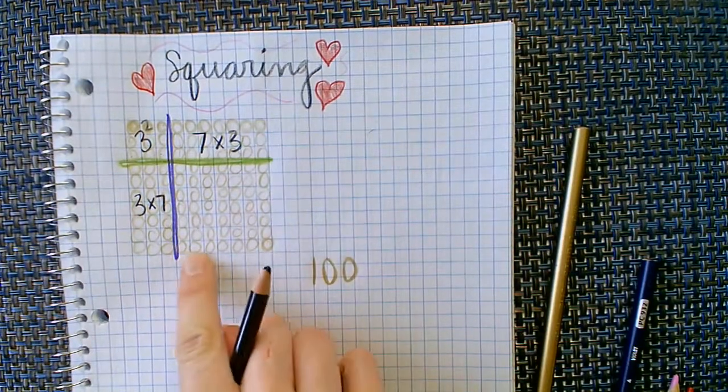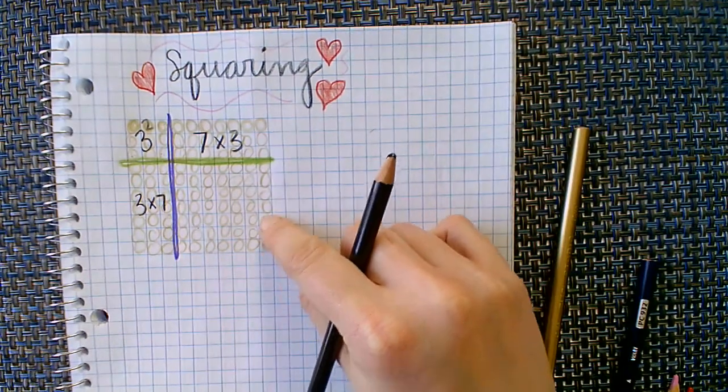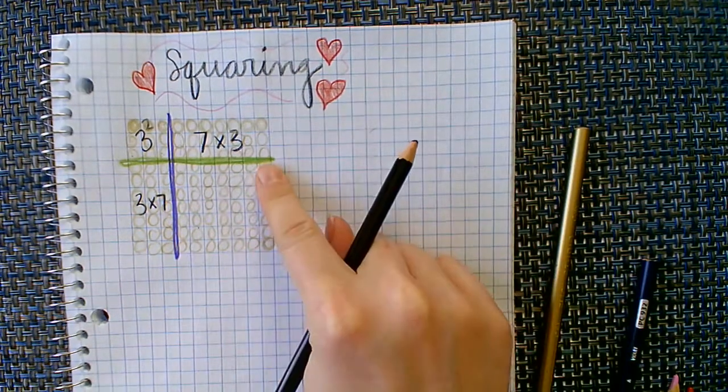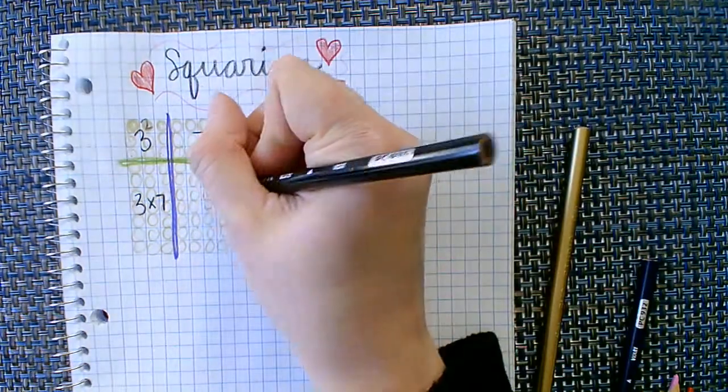Then what do I have here? One, two, three, four, five, six, seven. One, two, three, four, five, six, seven. Seven times seven, which we know is 49, but we could also call that seven squared.